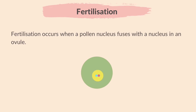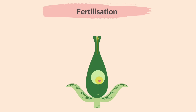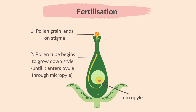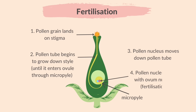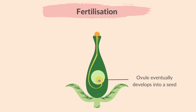Fertilization occurs when a pollen nucleus fuses with a nucleus in an ovule. Here's how it takes place: the pollen grain lands on the stigma; a pollen tube grows down the style until it enters the ovule through the micropyle; the pollen nucleus moves down the pollen tube and fuses with the ovum nucleus — this is fertilization and a zygote is formed. The zygote divides and eventually forms a seed within the ovule, and the ovary wall develops into a fruit.